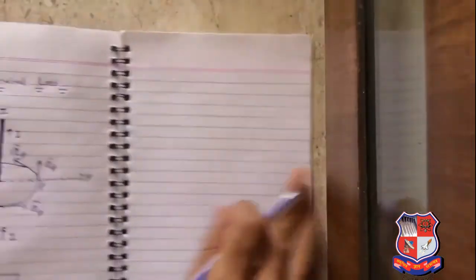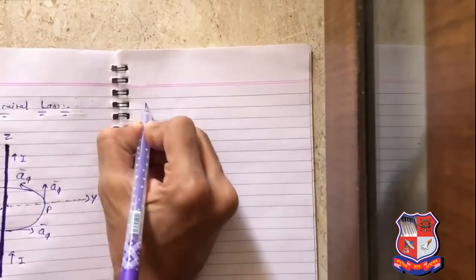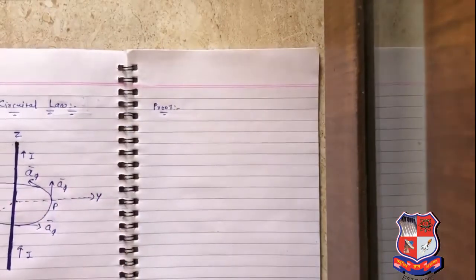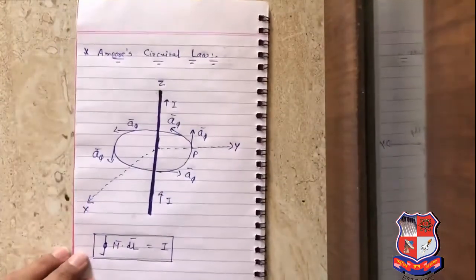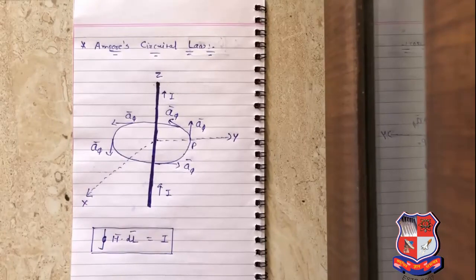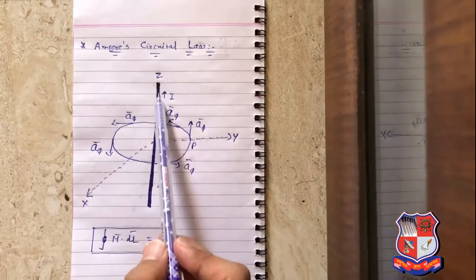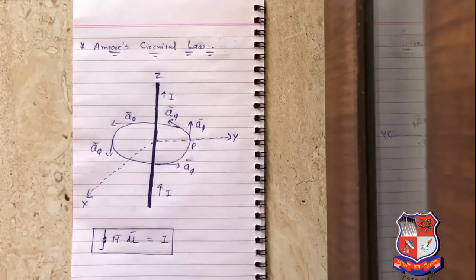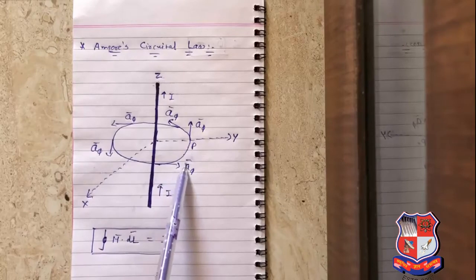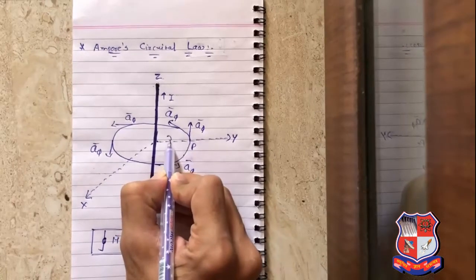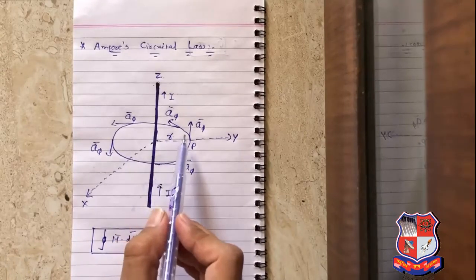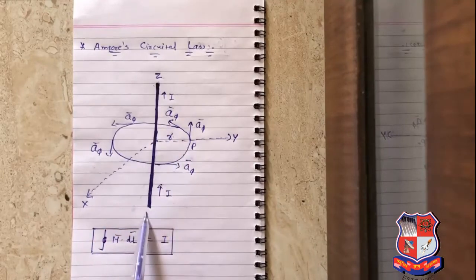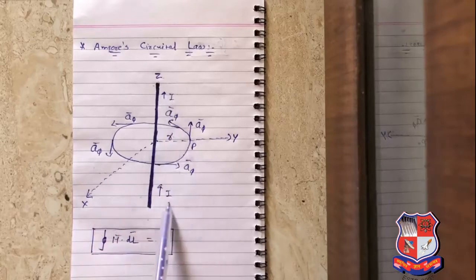Now we will see the proof of Ampere's Circuital Law. Before going to the proof, let us consider this figure. Consider a long straight conductor carrying the current I, placed along the z-axis as shown in the figure. Consider a closed circular path of radius r which encloses the straight conductor carrying direct current I.